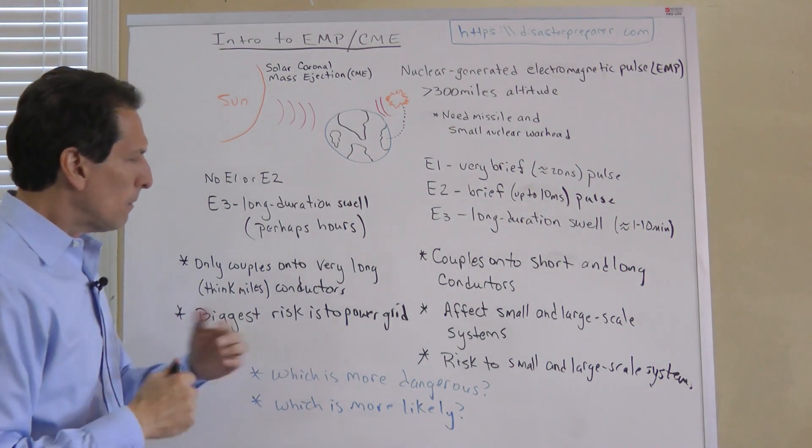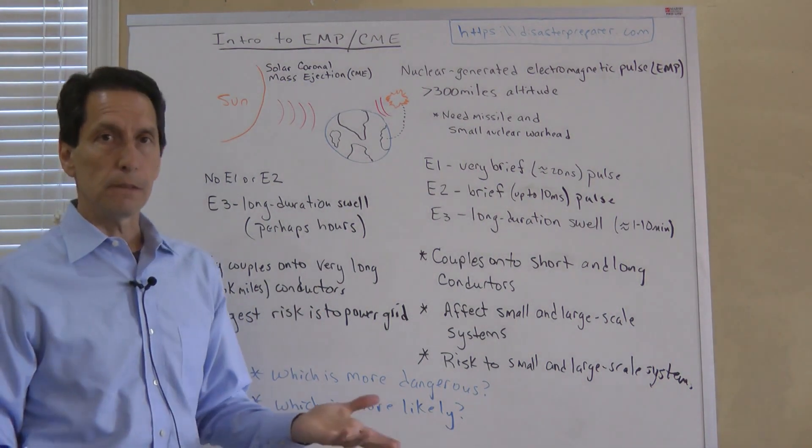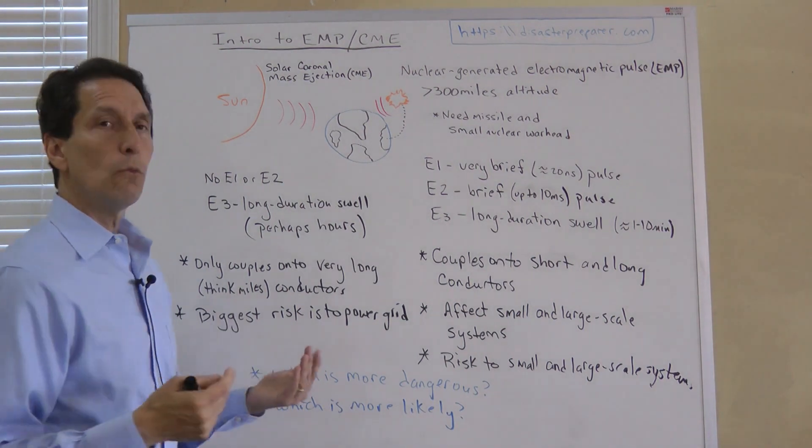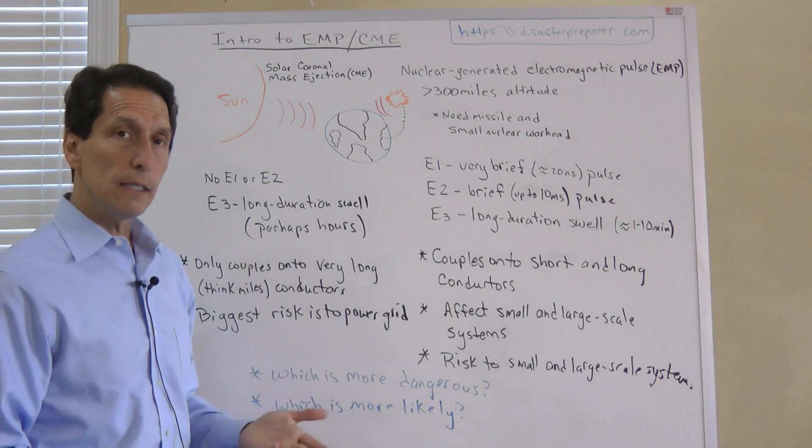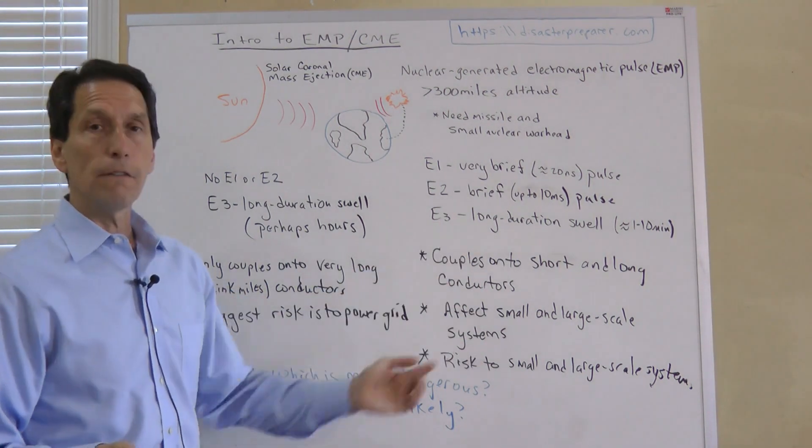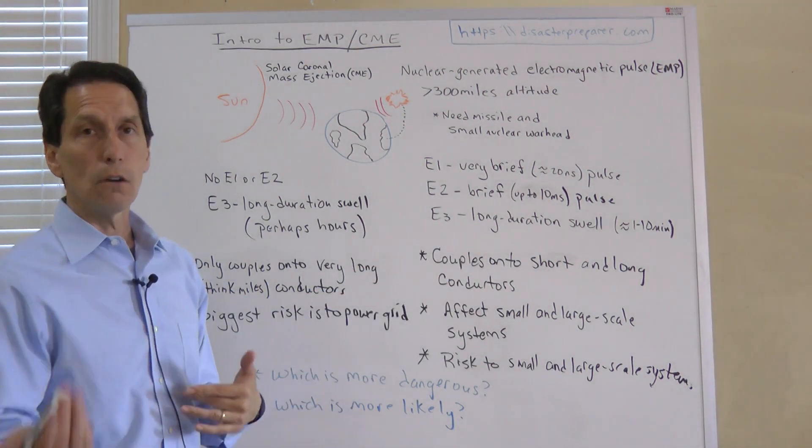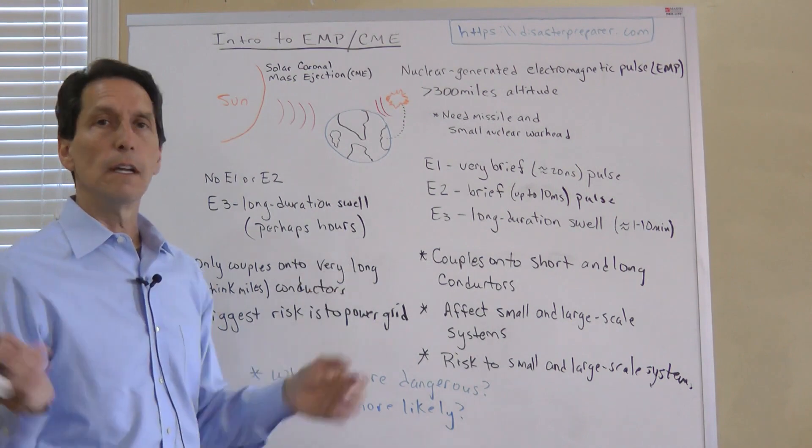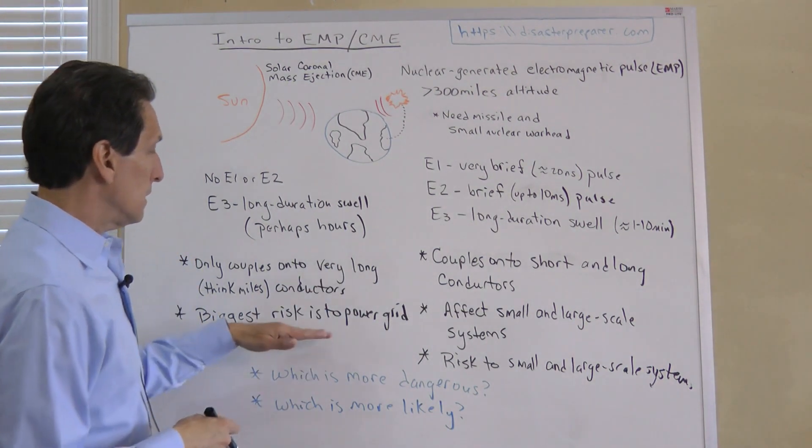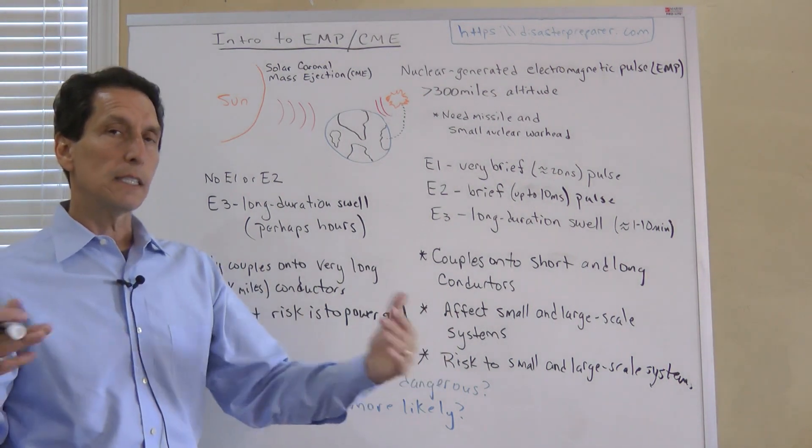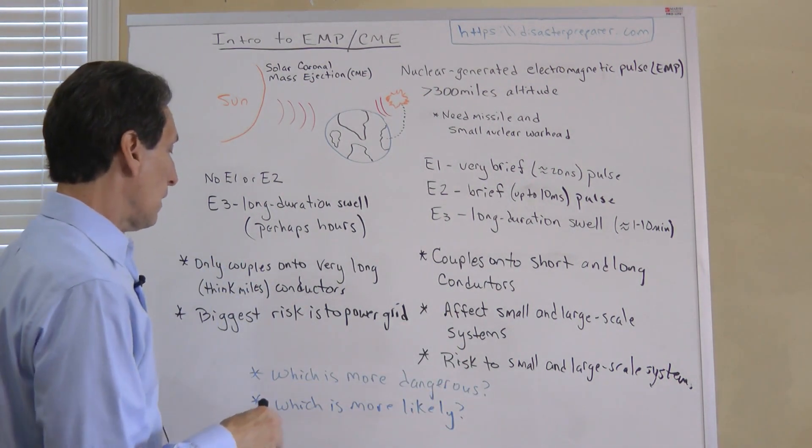So people often ask: which of these is more dangerous? On the surface, one would say the EMP is more dangerous because it has all of these different effects. It can affect small things and large things. It can cause damage to your car, your radios, anything else freestanding as well. Whereas the CME really only damages things connected to those really long conductors.